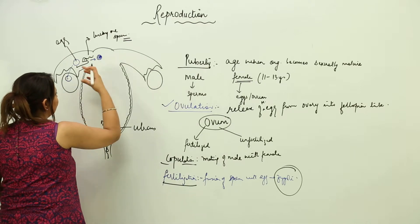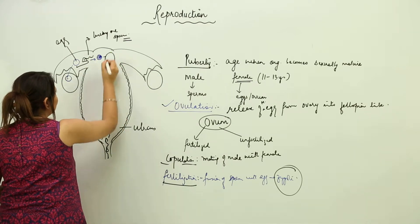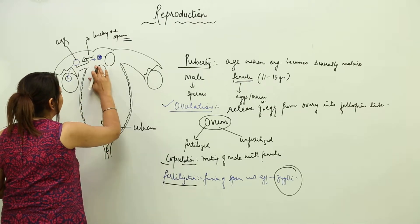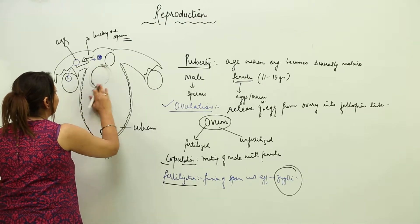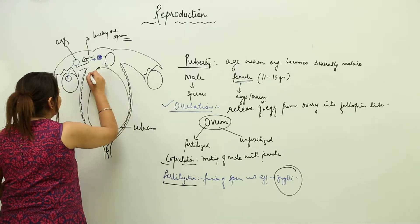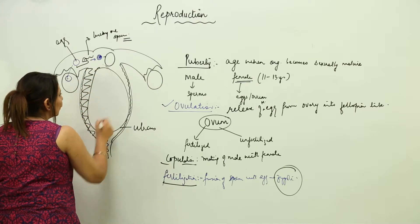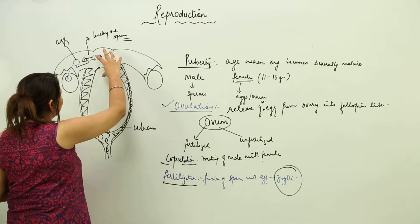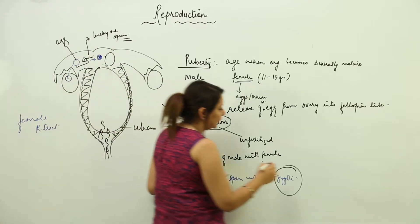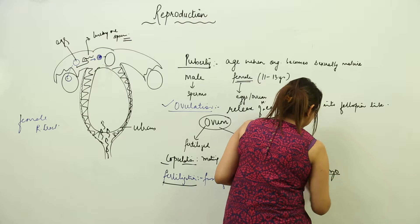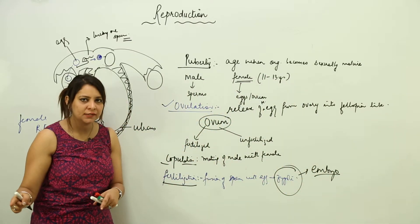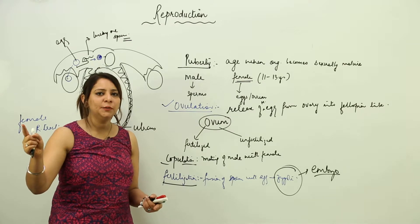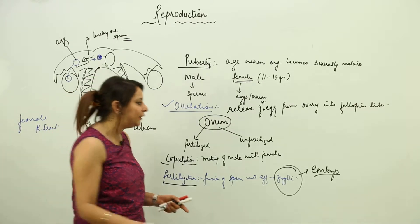The zygote starts developing, grows bigger and bigger, and finally gets shifted from the fallopian tube into the uterus, where it grows further and gets embedded in the thick uterine wall. The developing stage is called the embryo. From the time of fertilization up to two months, it is called an embryo. After two months, the developing stage is called a fetus.